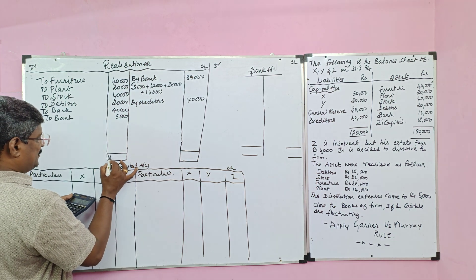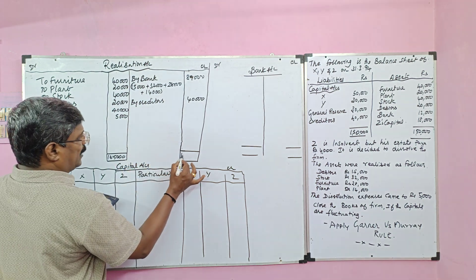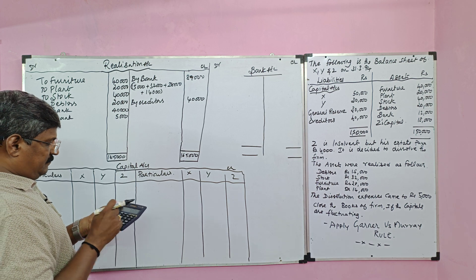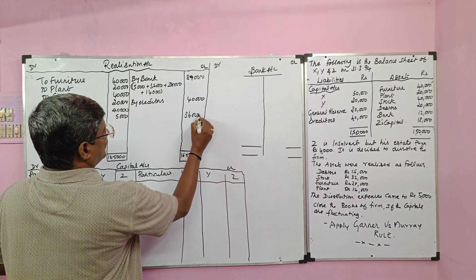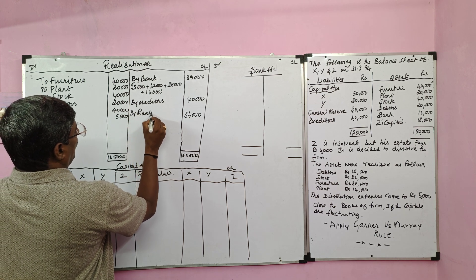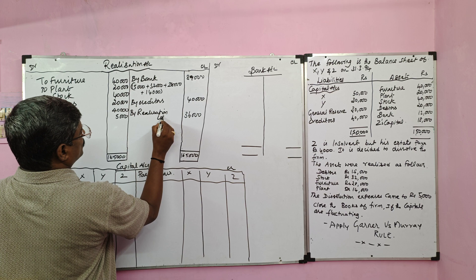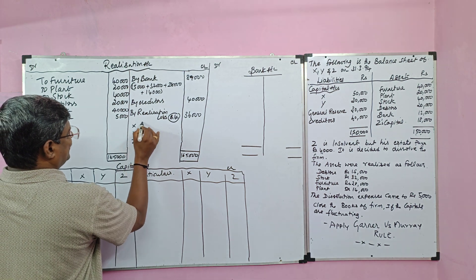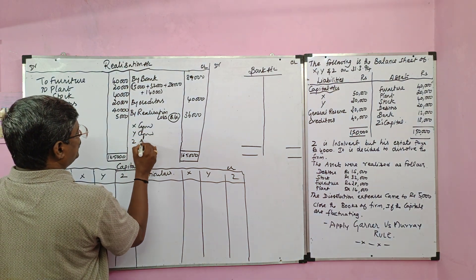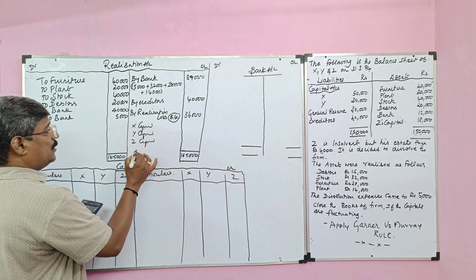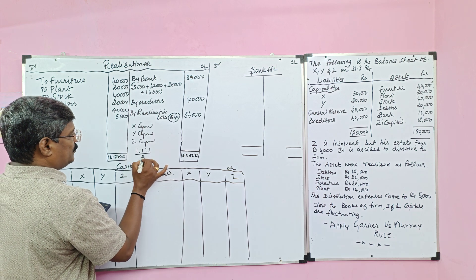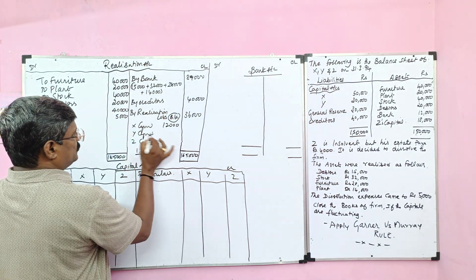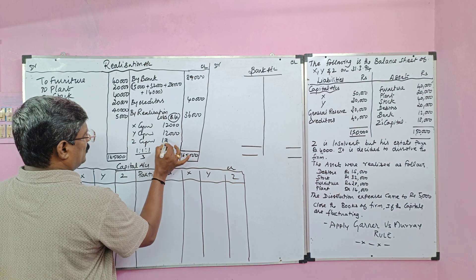The total debit side value is 1,65,000. The credit side value is 89,000 minus 40,000. The balance is considered as realization loss. This loss is shared by all partners X, Y, and Z in the old profit sharing ratio. In this problem, old profit sharing ratio is not given, so we assume all partners share profit and loss in equal proportion — 1/3, 1/3, 1/3. Dividing 36,000 in 1:1:1, we get 12,000 to X, 12,000 to Y, and 12,000 to Z.